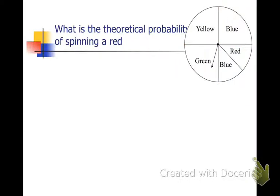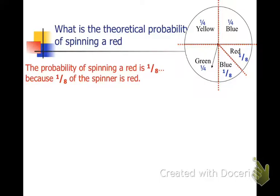What about spinning red? It's divided a little bit differently because red represents a smaller than one-fourth section. It's actually half of a fourth or one-eighth. So you would expect to get red one out of eight times.